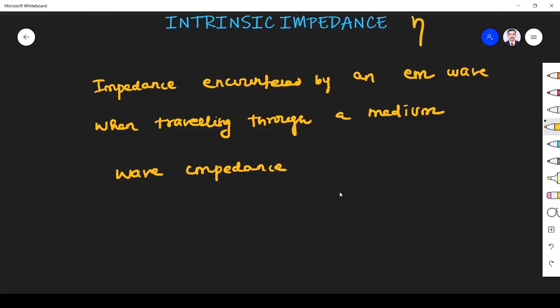We have a few more definitions. Intrinsic impedance is defined in terms of electric field and magnetic field because it is the EM wave facing that impedance. Intrinsic impedance eta is given by the ratio of magnitude of electric field to the magnitude of magnetic field.